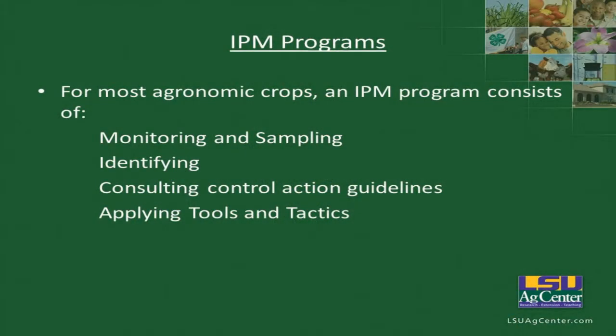For most agronomic crops, as we covered before, an IPM program consists of monitoring and sampling, identifying, consulting your control action guidelines, and then applying the tools and tactics. In our last segment, we covered monitoring and sampling. Now that we have those different insects, we need to identify what's there, and then we can decide what kind of control actions we're going to take.